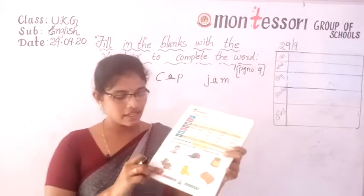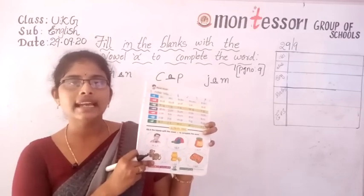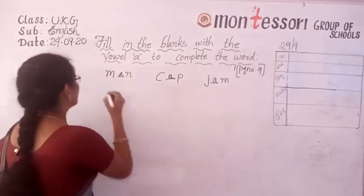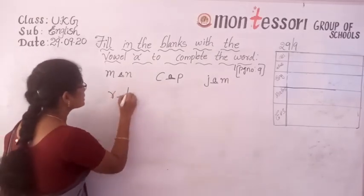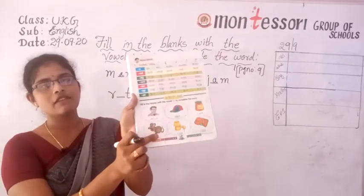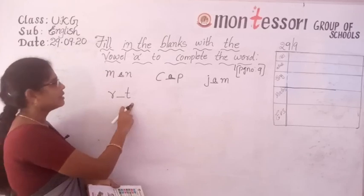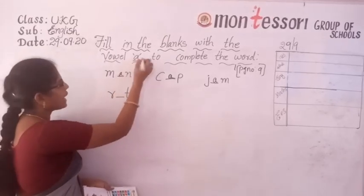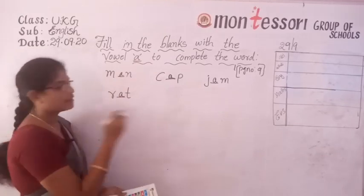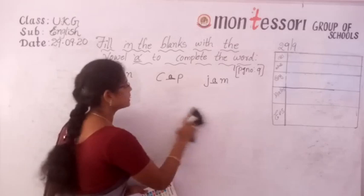Now next picture. What is this picture — cat or rat? It is a rat. Below this picture what they have given is R-T. You have to fill in the vowel A. R-A-T, rat.